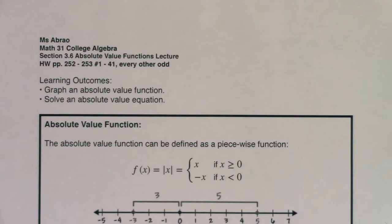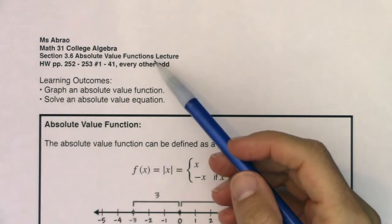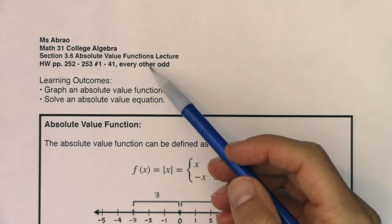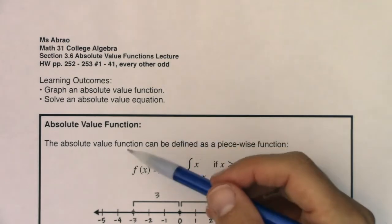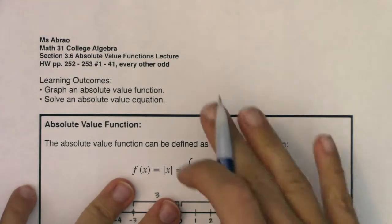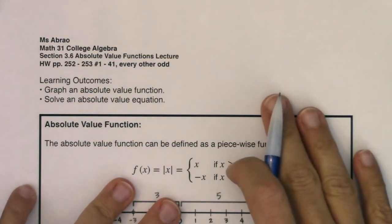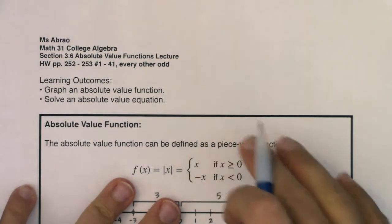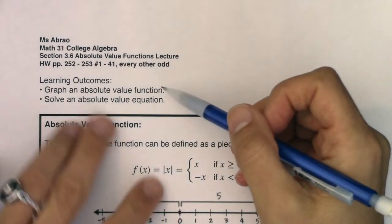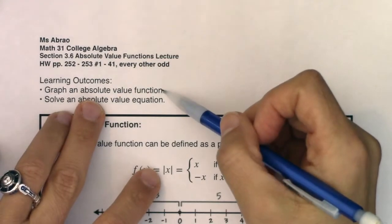Hey, Math 31. Welcome to section 3.6. In this section, we're going to take a look at the absolute value function, and we're going to transform it — shift it up, down, left, and right. By the end of this section, I want to make sure we can graph an absolute value function.